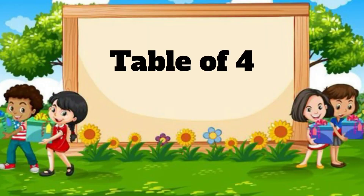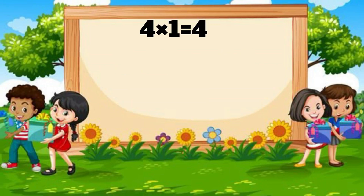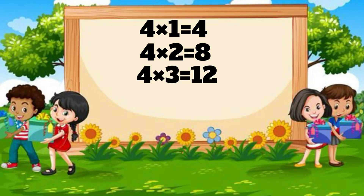Table of Four. Four one's a four. Four two's a eight. Four three's a twelve. Four four's a sixteen.